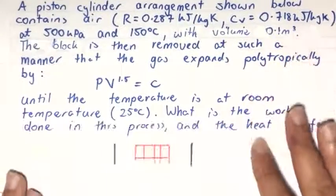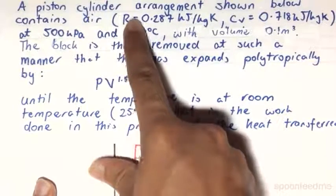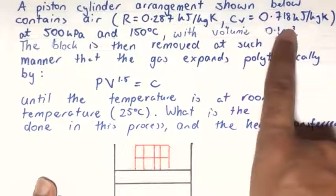A piston cylinder arrangement shown below contains air with these specific properties, that is the gas constant of 0.287 kilojoules per kilogram-kelvin and a specific heat capacity of 0.718 kilojoules per kilogram-kelvin.